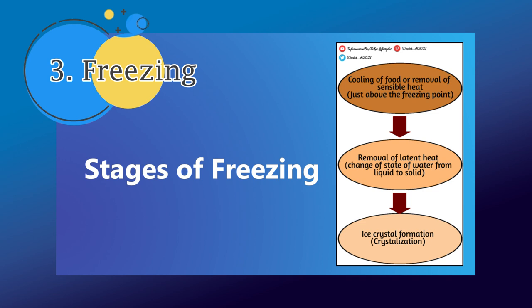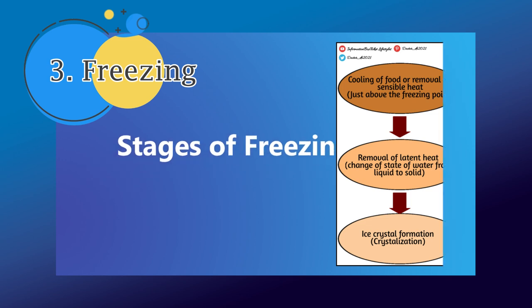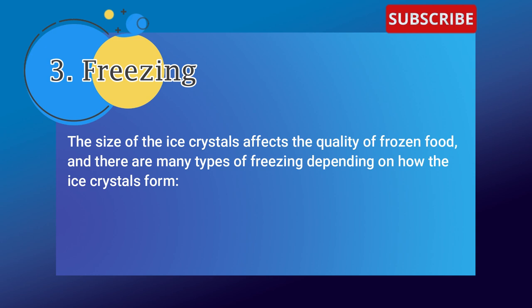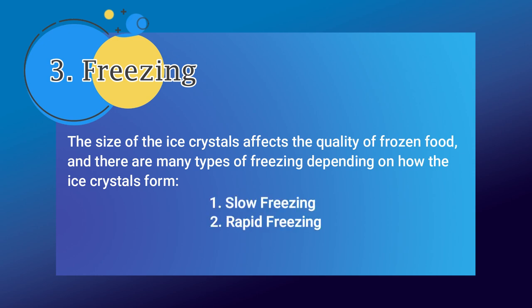The stages of freezing include: first, cooling of food or removal of sensible heat just above the freezing point; then removal of latent heat, which is the change of state of water from liquid to solid; and then ice crystal formation, known as crystallization. You can see the process in a graph of temperature versus time. The size of ice crystals affects the quality of frozen food, and there are two types of freezing depending on how the ice crystal forms: slow freezing and rapid freezing.